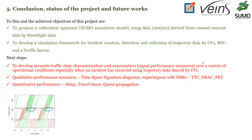The current status of the project is that we have developed the simulation framework in SUMO as well as the connectivity simulation with Omnet++. The future steps will be to develop qualitative performance measures such as the time-space diagram, and to superimpose it with SUMO's safety surrogate measure outputs — such as time to collision, DRAC values, and post-encroachment time (PET). We also want to develop quantitative performance measures such as delay and time to collision resulting from an incident occurring on the corridor.